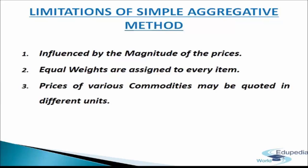The limitations of the simple aggregative method are as follows. First, it is influenced by the magnitude of prices — higher-priced commodities receive greater weightage. For example, if rice prices are relatively higher than wheat, rice will influence the index more. Second, equal weights are assigned to every item regardless of relative importance; for instance, pencil and milk are treated equally, which limits practical utility.